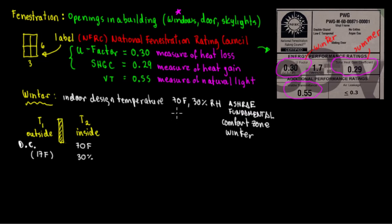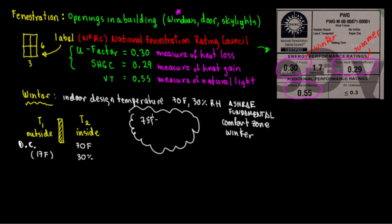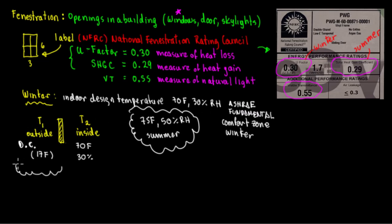In summer, instead of 70, you're going to have 75 degrees Fahrenheit and 50% relative humidity. So you have the indoor design temperature for both winter and summer, and the outside design temperature depends on the location.